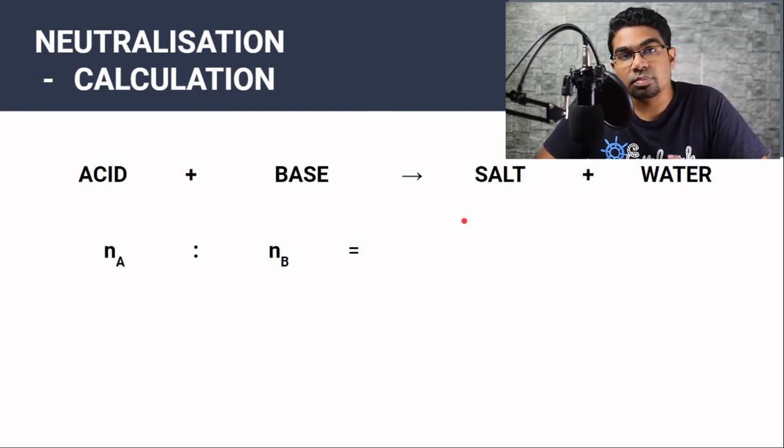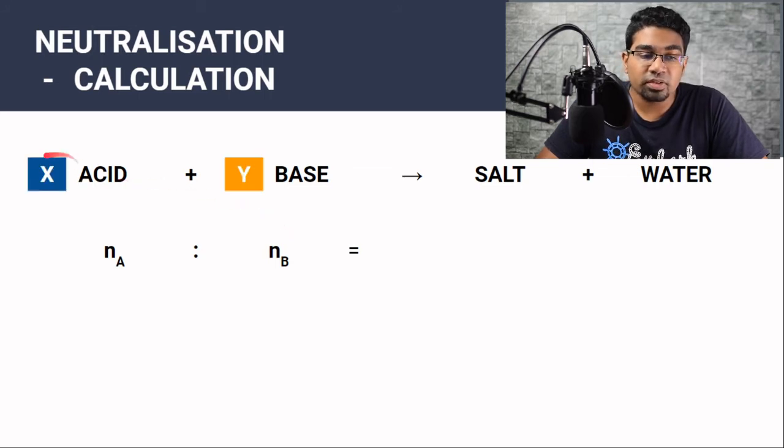This calculation is based on the ratio of acid that reacts with base. So this is the moles of acid to the moles of base. This is the whole basis of the calculation. So if the moles of acid is X and it reacts with Y moles of base, then the moles of acid to base will be X to Y.